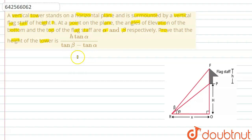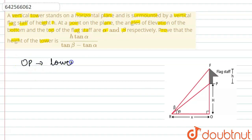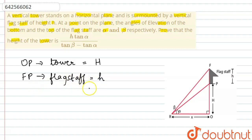In the question, there is a vertical tower upon which a vertical flagstaff of height h is placed. On the plane, the angles of elevation of the bottom and top of the flagstaff are given as alpha and beta. We have drawn a diagram: OP is the tower and FP is the flagstaff above it. We have taken OP as capital H and FP as small h.